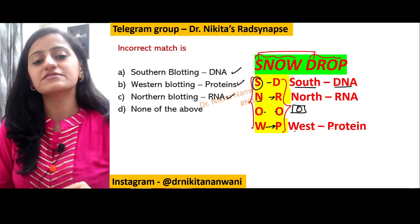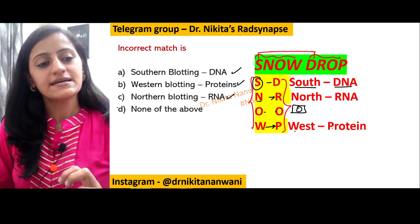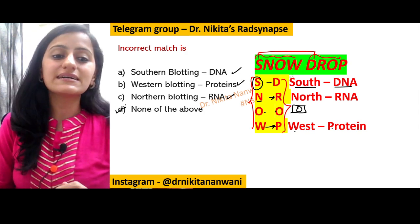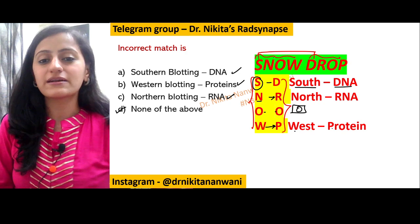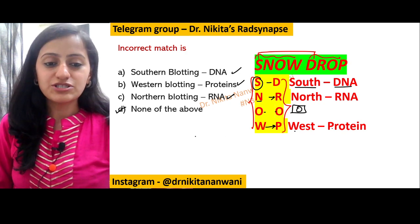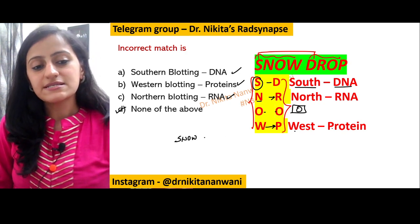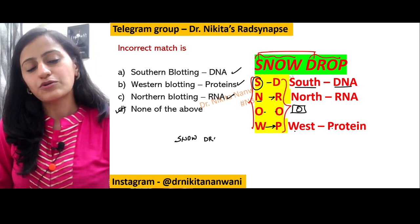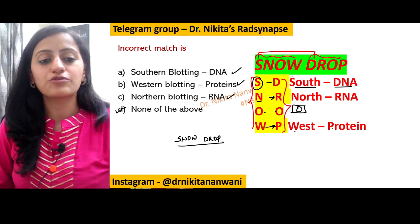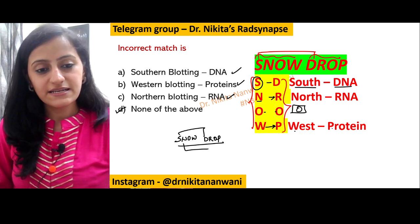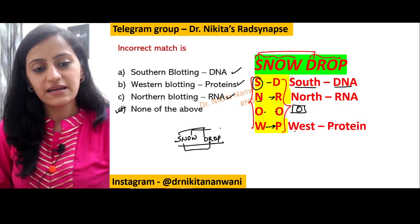So Southern is for DNA, Northern is for RNA, Western is for proteins — therefore 'none of the above' is incorrect, meaning all the options given are correct. Just remember the mnemonic: Snow Drop — Southern/DNA, Northern/RNA, Western/proteins.